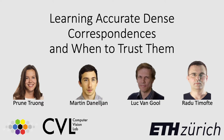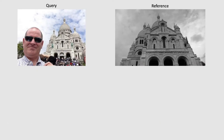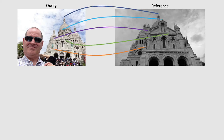I'm going to present learning accurate dense correspondences and when to trust them. In this work, we tackle the problem of dense correspondence estimation. From a pair of reference and query images, we want to find the flow field relating each pixel of the reference to the query.